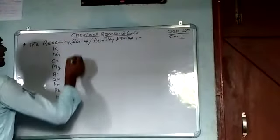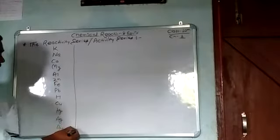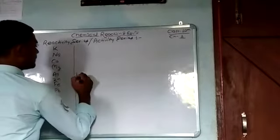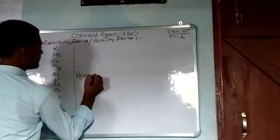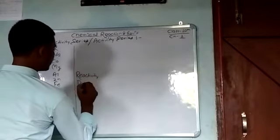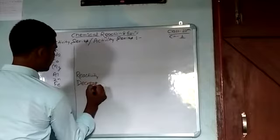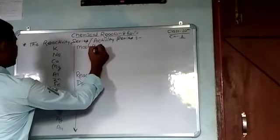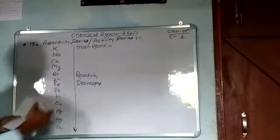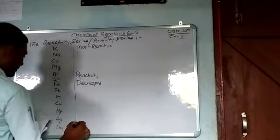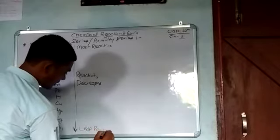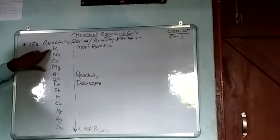This reactivity series is arranged in decreasing order of reactivity. Reactivity decreases as we go down the series. It means the most reactive element is present at the top (upward direction) and the less reactive element is present at the bottom (downward direction). So Potassium is at the top.